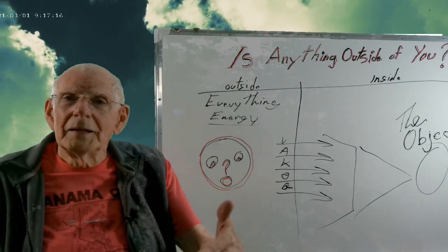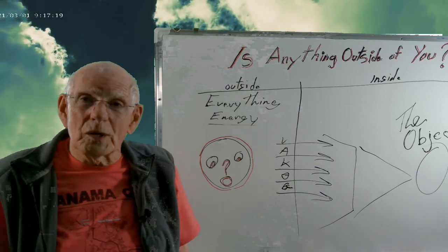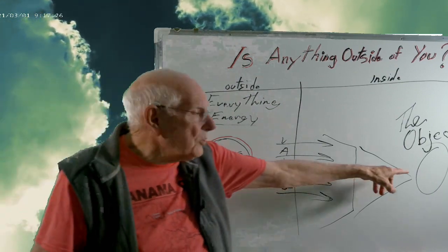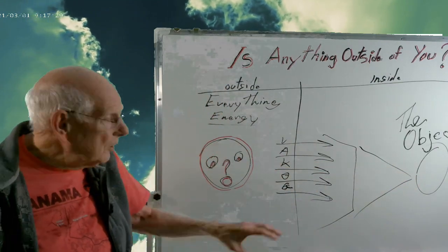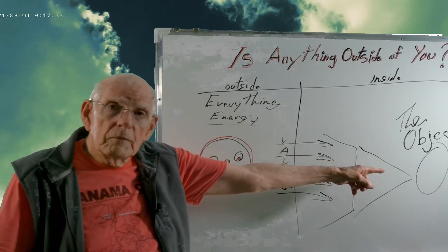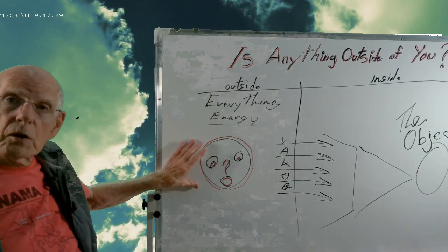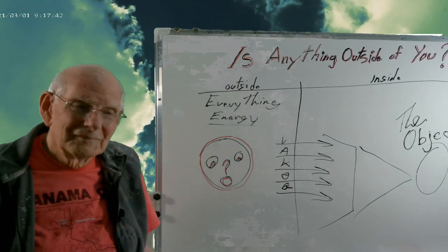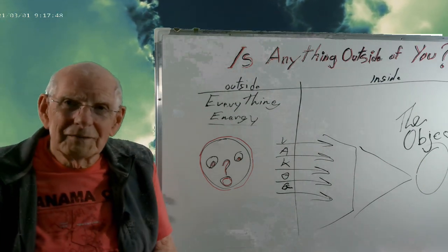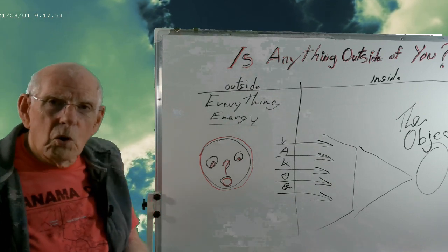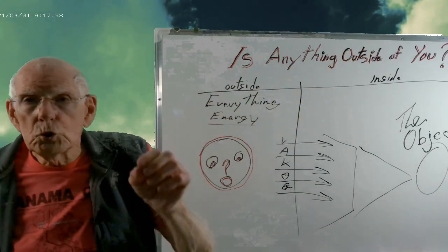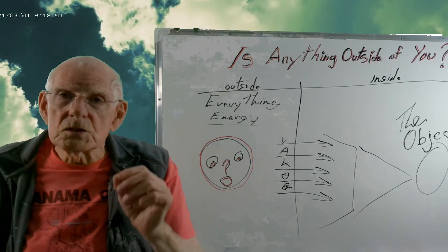And since the conscious mind is the only thing that tells you what's going on, you believe that this object here which is created in here is outside of you, and you will lay that interpretation of the object onto the energy that's out here. You have no idea what you're looking at, no idea what's outside of you, if anything is there, until you interpret it inside of you.